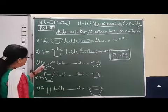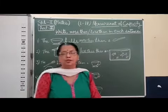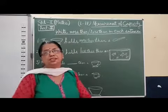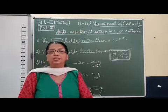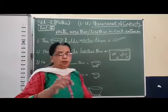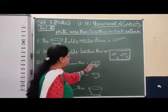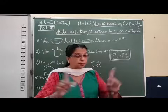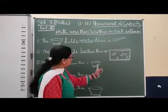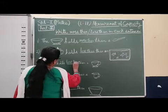The third one is a dropper — you have seen this in the medical shop or sometimes in the hospital. It is used to take medicine when a very small quantity is needed, with liquid falling drop by drop. The dropper holds dash than a cup. You have to compare the first with the second — the dropper holds less than a cup.